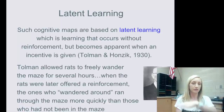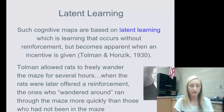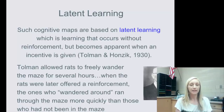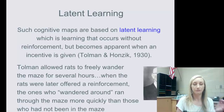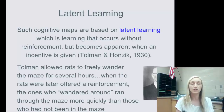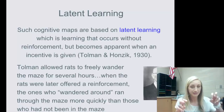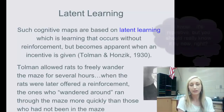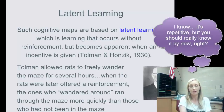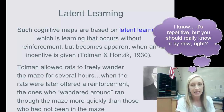Tolman allowed rats to freely wander a maze for several hours. When those rats were later offered reinforcement, the ones who had previously wandered the maze ran through it more quickly than those who had never been in the maze before.